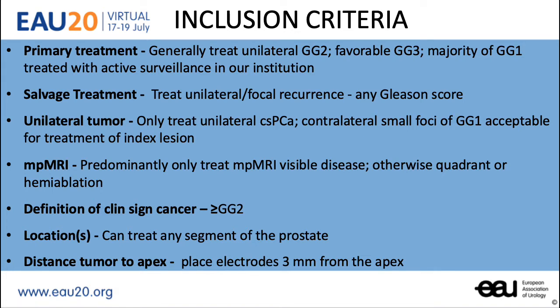The inclusion criteria of our patients who underwent focal irreversible electroporation was predominantly for primary treatment with unilateral Gleason Grade 2 or favorable Gleason Grade 3 disease. The majority of Gleason Grade 1 disease in our institution is treated with active surveillance. Salvage treatment was also offered to treat unilateral focal recurrence of any Gleason score. The tumor needed to be unilateral, but contralateral small foci of Gleason Grade 1 was acceptable for the treatment of an index lesion.